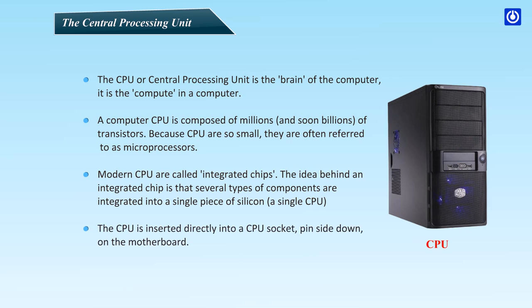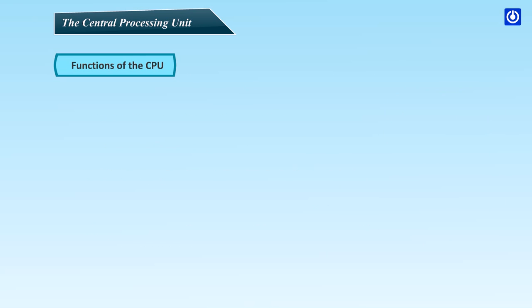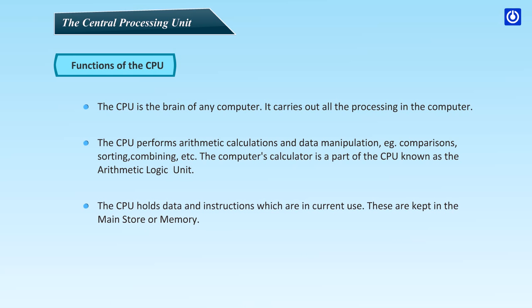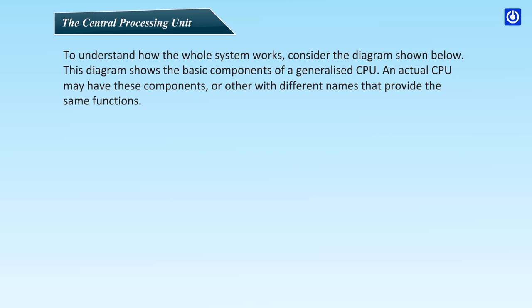A single CPU is inserted directly into a CPU socket, pin-side down on the motherboard. Functions of the CPU: The CPU is the brain of any computer. It carries out all the processing in the computer. The CPU performs arithmetic calculations and data manipulation — for example, comparisons, sorting, combining, etc. The computer's calculator is a part of the CPU known as the arithmetic logic unit. The CPU holds data and instructions in current use, kept in the main store or memory. This diagram shows the basic components of a generalized CPU. An actual CPU may have these components or others with different names that provide the same functions.